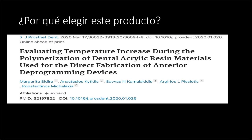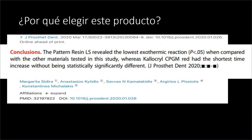¿Para qué sirve esa menor reacción exotérmica? Porque este material no solo lo vamos a utilizar para hacer un poste o trabajar sobre dientes tratados endodónticamente, sino que en algunas ocasiones podemos utilizarlo sobre dientes vivos y sobre estructuras para implantes. Se ha registrado que la reacción exotérmica puede dañar el soporte del implante al aumentar drásticamente la temperatura. Este material es uno de los que menos reacción exotérmica tiene, si no es que el que menos.